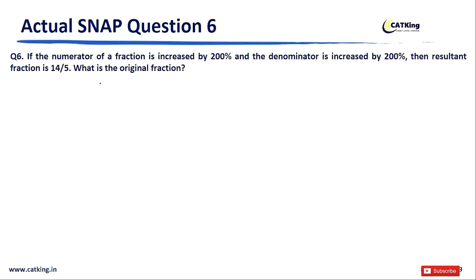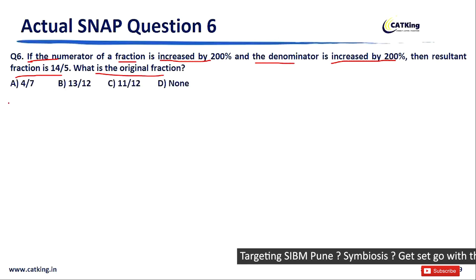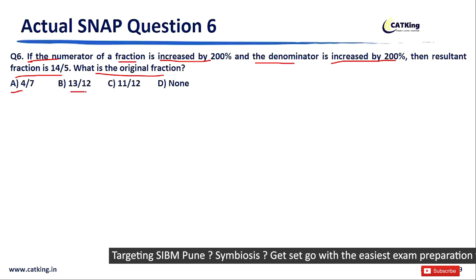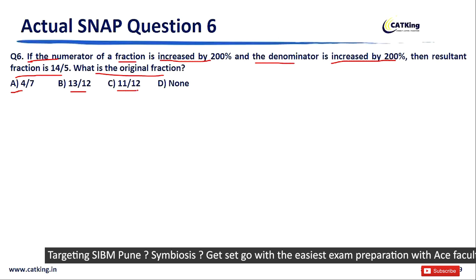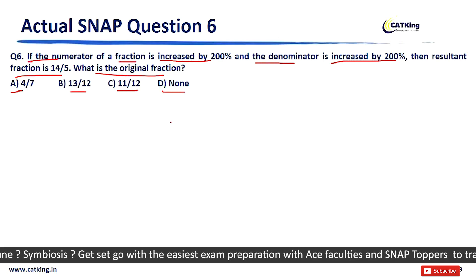Question number 6: If the numerator of a fraction is increased by 200% and the denominator is also increased by 200%, the resultant fraction is 14/5. We need to find the original fraction. Options: A) 4/7, B) 13/12, C) 11/12, D) None of these.